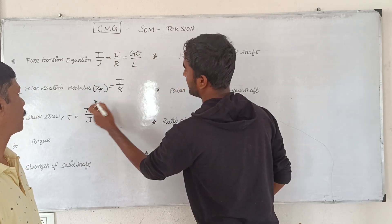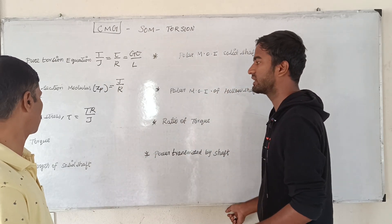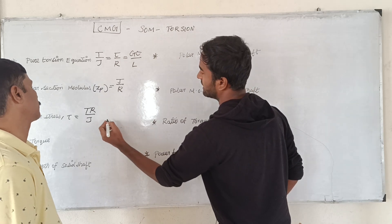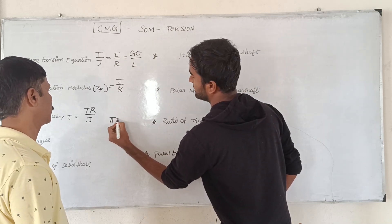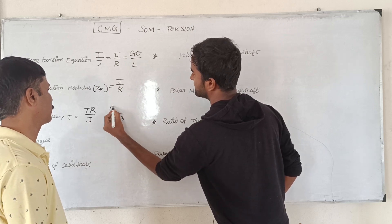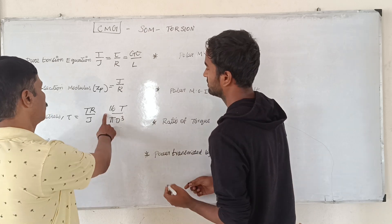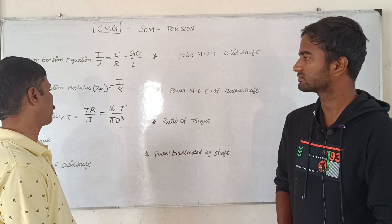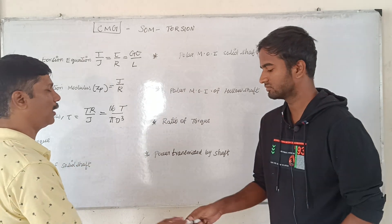Sometimes you call it J by R. Mostly we use the round shape, the circular shape. For a circular cross-section, J by R equals Pi·D³ by 16. If you look at the shear stress formula, it becomes 16·T by Pi·D³. We also write it as T by ZP.